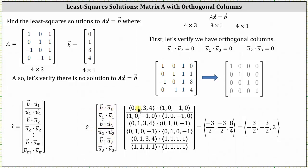For the first component, we have vector B dot vector u₁ divided by vector u₁ dotted with itself, which results in −3/2. For the second component, we have vector B dotted with vector u₂ divided by vector u₂ dotted with itself, which gives us again −3/2. For the third component, we have vector B dotted with vector u₃ divided by vector u₃ dotted with itself, which results in 8/4, simplifying to 2.